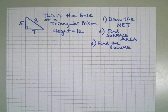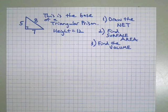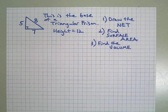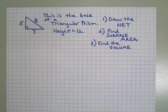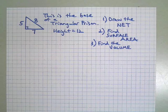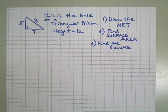Alright, here's a chance to practice what you learned on the previous video. Here we have a base of a triangular prism. It's a right triangle base with the measurements, and the height is 12. Three tasks: draw the net, find the surface area, find the volume.